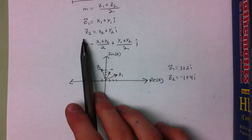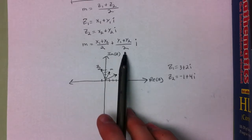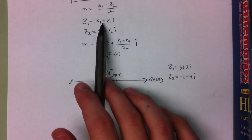If we have z sub 1 and z sub 2 in this form, then we can calculate the midpoint by averaging the real part and averaging the imaginary part, or you can just add the two numbers together and divide by two.